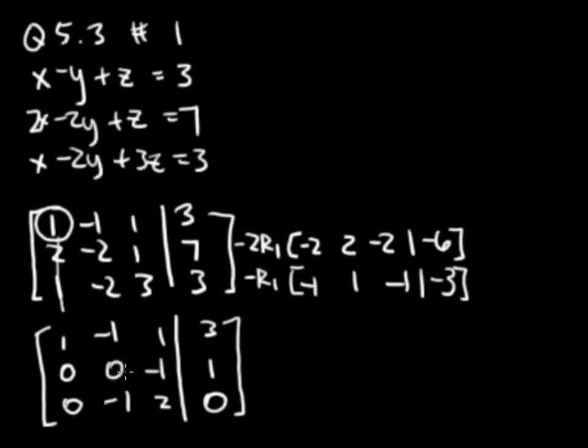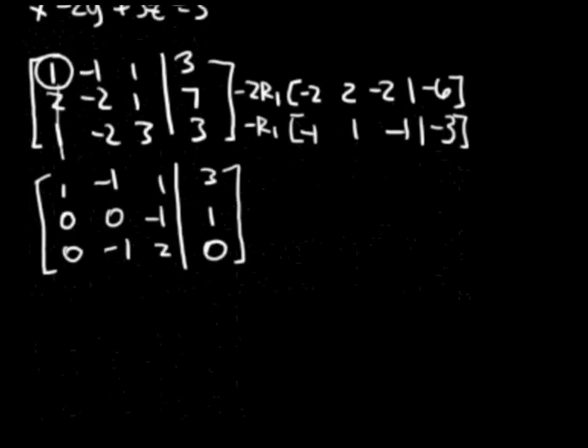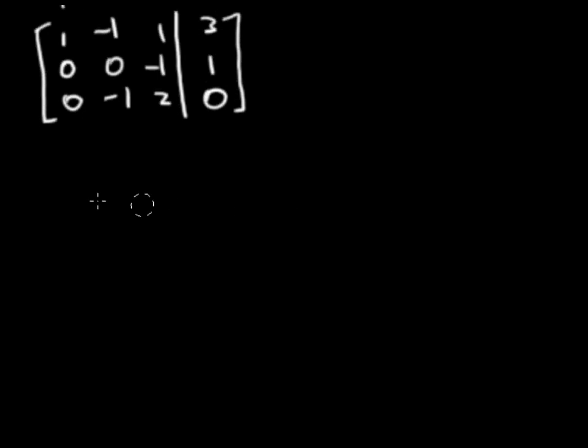Okay, so now I'm going to try to get this to a 1. This is already a 0 here, and we never want to change a 0 back to some number. So instead of adding something to row 2 to make this a 1, I'm just going to simply switch row 2 and row 3 for the next step.